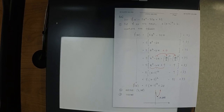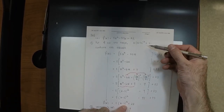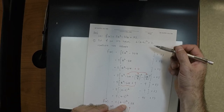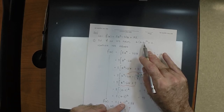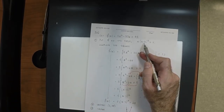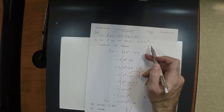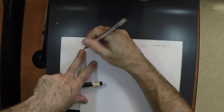Now, why is it x minus h and plus k in standard form? What would happen if it were x plus k? Let's draw one in the time remaining.